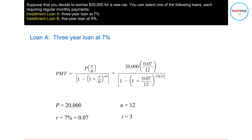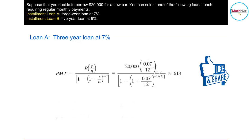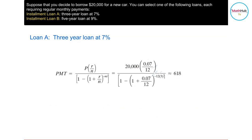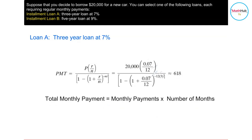Plugging this into your calculator, you get $618. So that means a $20,000 loan payable within three years, the monthly payment will be $618 at 7% interest. To compute the total interest, take the monthly payment of $618 and multiply that by the number of monthly payments made over three years.